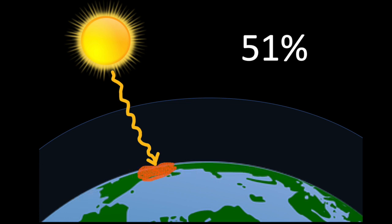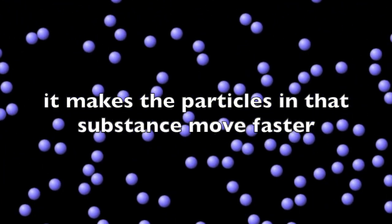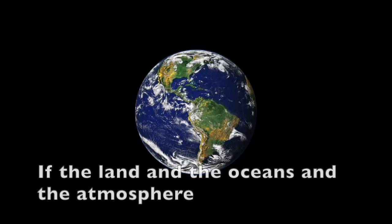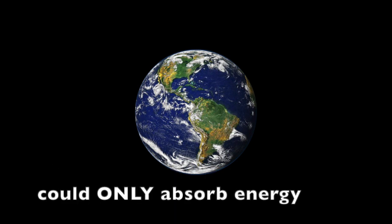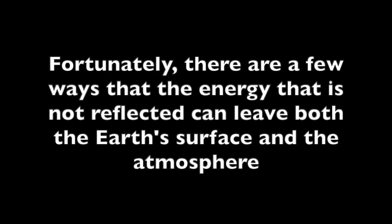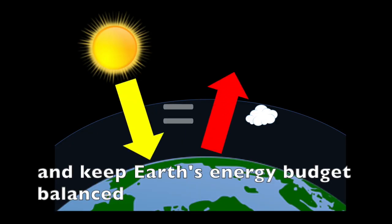When energy is absorbed by a substance, it makes the particles in that substance move faster and the temperature increases. Now, if the land and the oceans and the atmosphere could only absorb energy, we'd have a big problem. The Earth would just keep getting hotter and hotter and hotter. Fortunately, there are a few ways that the energy that is not reflected can leave both the Earth's surface and the atmosphere, so that it can radiate back into space and keep Earth's energy budget balanced.